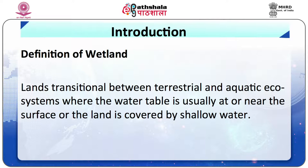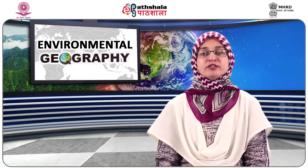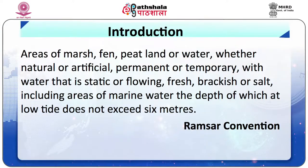The most accepted definition of wetlands is: lands transitional between terrestrial and aquatic ecosystem where the water table is usually at or near the surface, or the land is covered by shallow water. The Ramsar Convention defines wetlands as areas of marsh, fen, peatland or water, whether natural or artificial, permanent or temporary, with water that is static or flowing, fresh, brackish or salt.